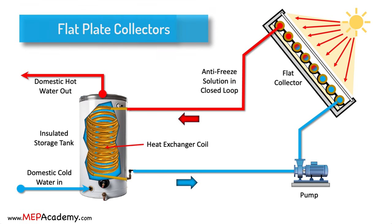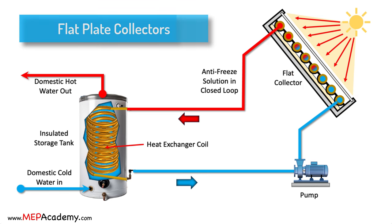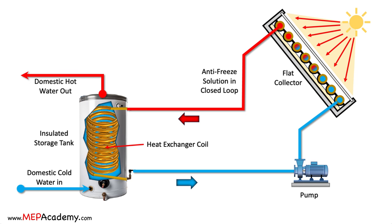Flat plate collectors are the most common type and consist of a flat insulated box with a transparent cover, usually glass on top. Inside the box is a dark absorber plate, typically made of metal or other materials with high thermal conductivity. Sunlight passes through the transparent cover and strikes the absorber plate, which absorbs the solar energy and converts it into heat. The heat is then transferred to a fluid, usually water or a heat transfer fluid, flowing through tubes attached to the absorber plate. Flat plate collectors are versatile and used in both residential and commercial solar water heating systems, suitable for moderate climates and domestic hot water applications.